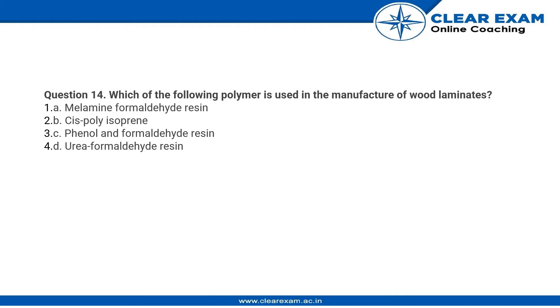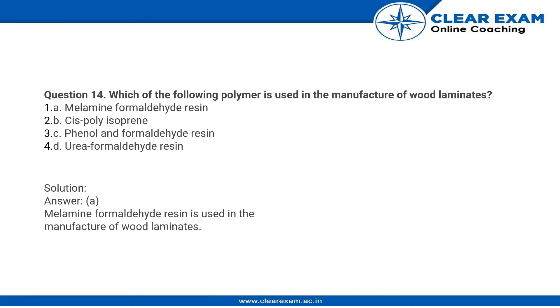This is a factual question — you need to know what is used in the manufacture of wood laminates. If you look at option A, that is the correct answer: melamine formaldehyde resin is used in the manufacture of wood laminates.